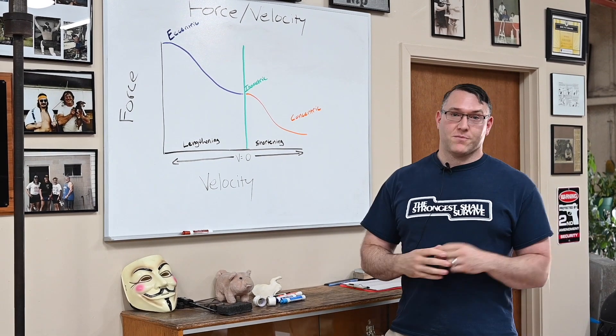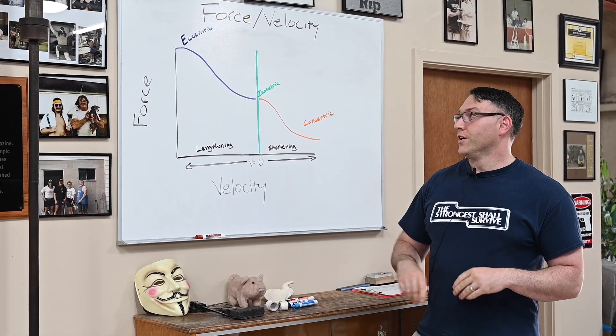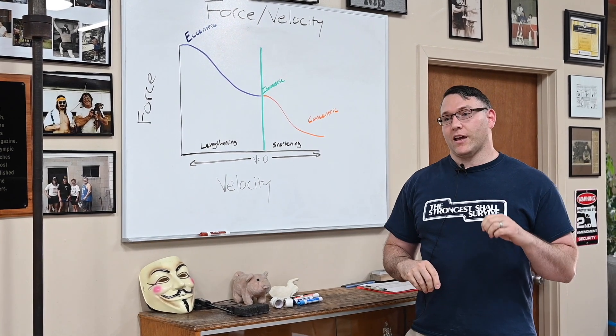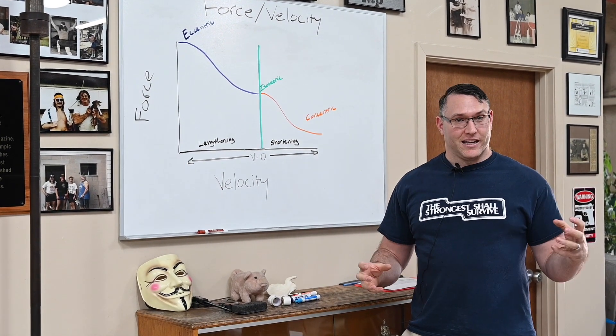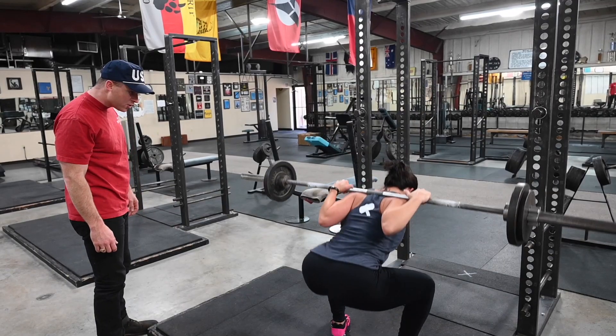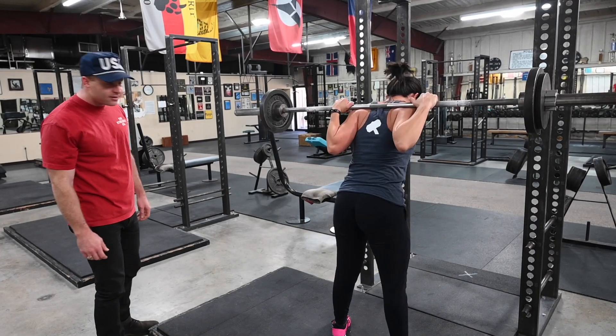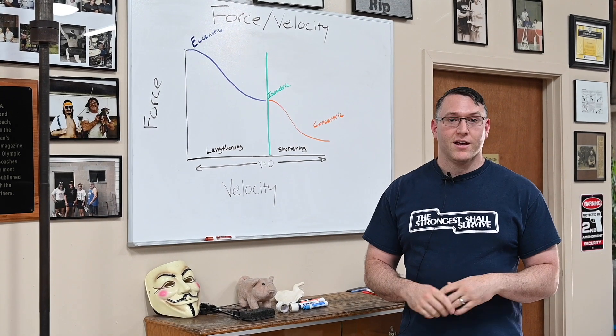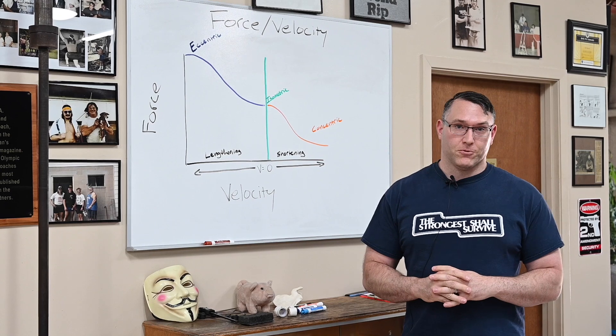We have three different types of muscle actions. We have eccentric muscle actions, which, simply put, is when the muscle is lengthening under a load. So you start your descent on the squat, your quadriceps are lengthening as you're lowering yourself down. They're working eccentrically during the descent.